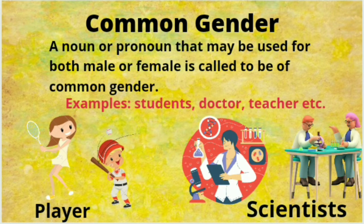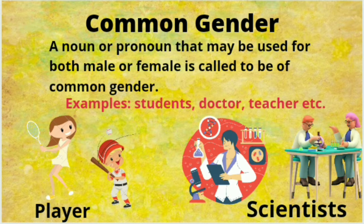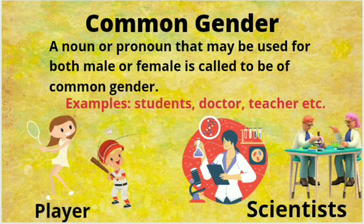Common gender — a noun or a pronoun that may be used for both male or female is called to be of common gender. Or we can say a noun that can denote both male and female is said to be of common gender. For example, a baby — you are not sure whether it is a boy or a girl, so baby represents a common gender. Similarly, child, parent, students, doctor, teacher, player, scientist, cousin, friend — those who can be either male or female we call those nouns common gender.